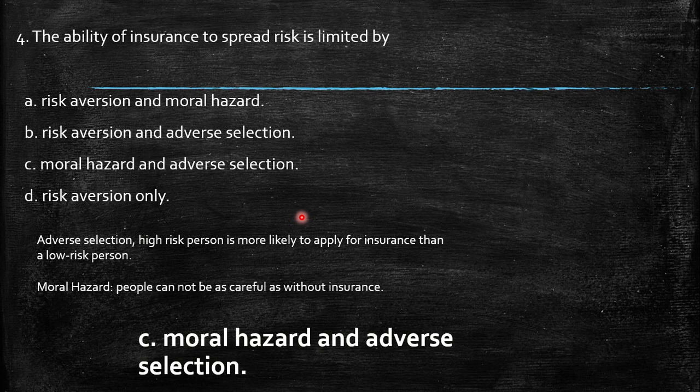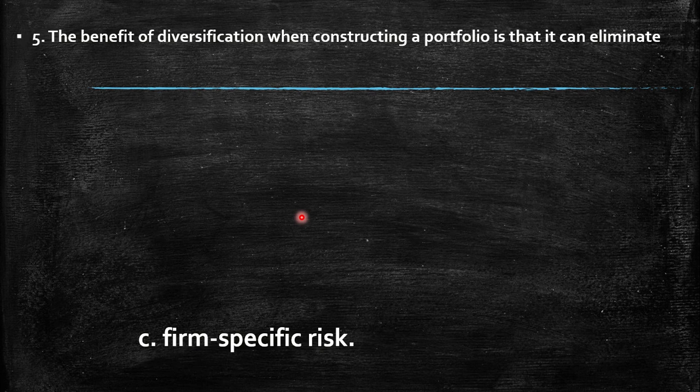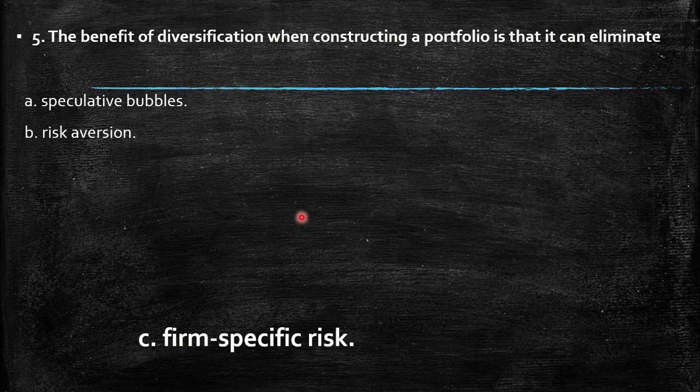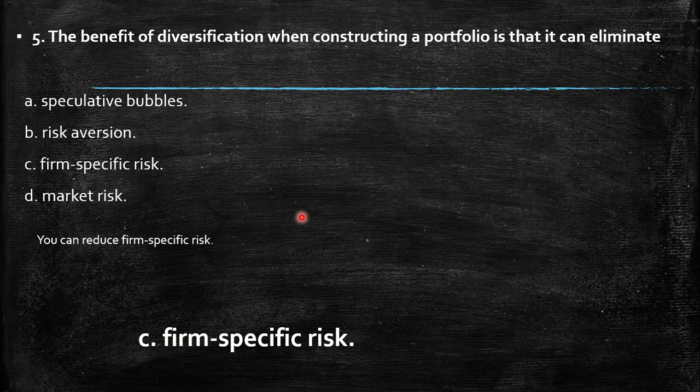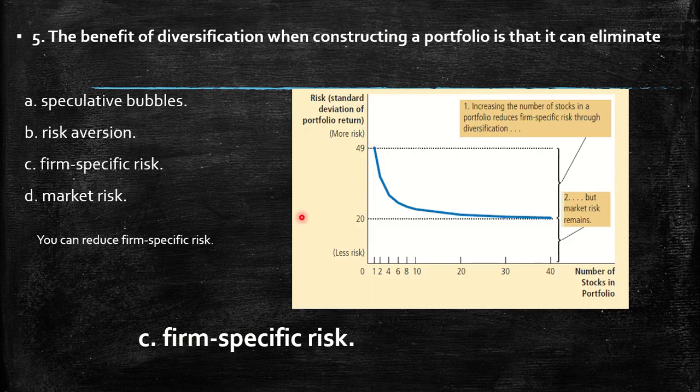Fifth, the benefit of diversification when constructing a portfolio is that it can eliminate: speculative bubbles, risk aversion, firm-specific risk, or market risk. You can reduce firm-specific risk. When you increase more stocks in your portfolio, you automatically reduce the firm-specific risk. However, the market risk remains. You can reduce but not eliminate firm-specific risk, so the answer is C.